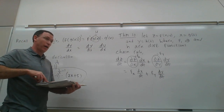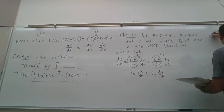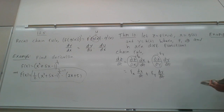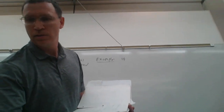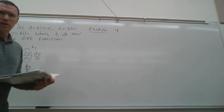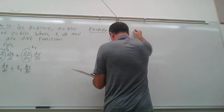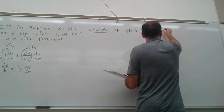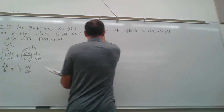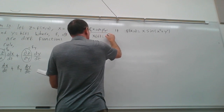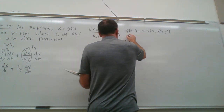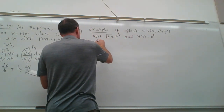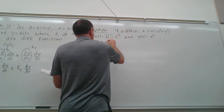Before looking at the proof, let's look at an example from the practice quiz. Given f(x, y) = x · sin(x² + y²), with x(t) = √t = t^(1/2) and y(t) = e^t, find dz/dt. We'll do this two different ways.